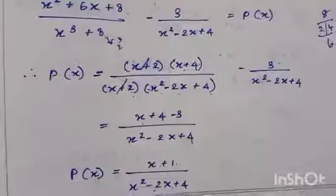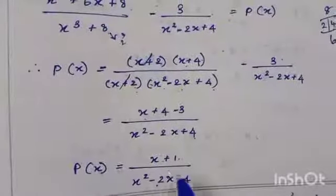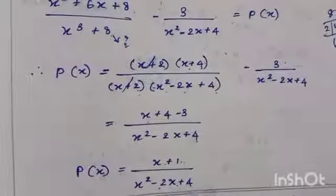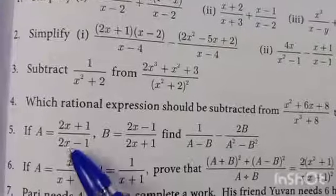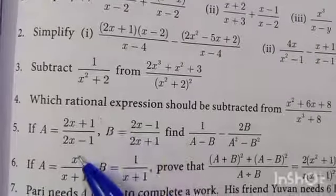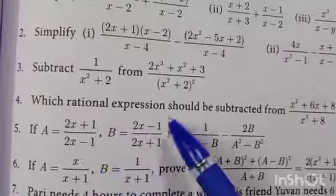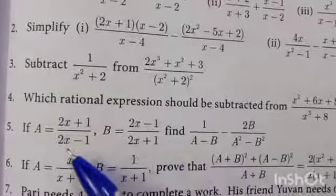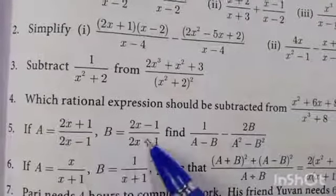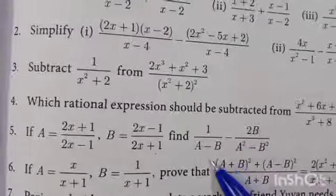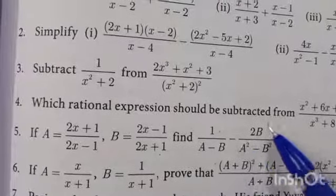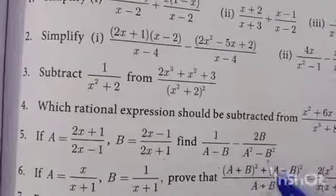So that unknown expression p(x) is (x plus 1) by (x-squared minus 2x plus 4). Fifth question: if a equals (2x plus 1) by (2x minus 1) and b equals (2x minus 1) by (2x plus 1), find 1 by (a minus b) minus 2b by (a-squared minus b-squared).